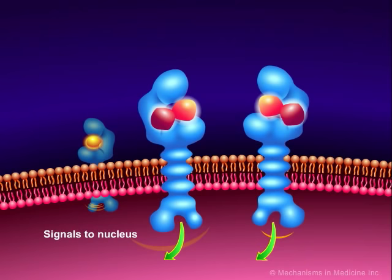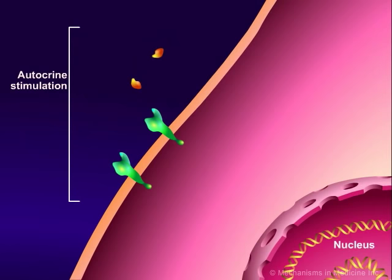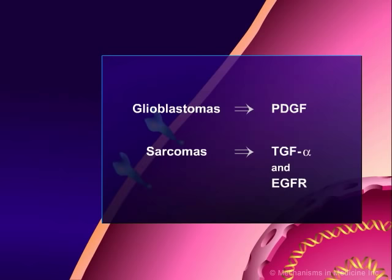Malignant cells generate many of their own growth signals, which allows them to divide with reduced external growth stimulation. Some cells are able to produce their own growth factors and stimulate their own growth. This is called autocrine stimulation. For example, glioblastomas express platelet-derived growth factor or PDGF. Sarcomas express tumor growth factor alpha or TGF-alpha, as well as epidermal growth factor receptor or EGFR.